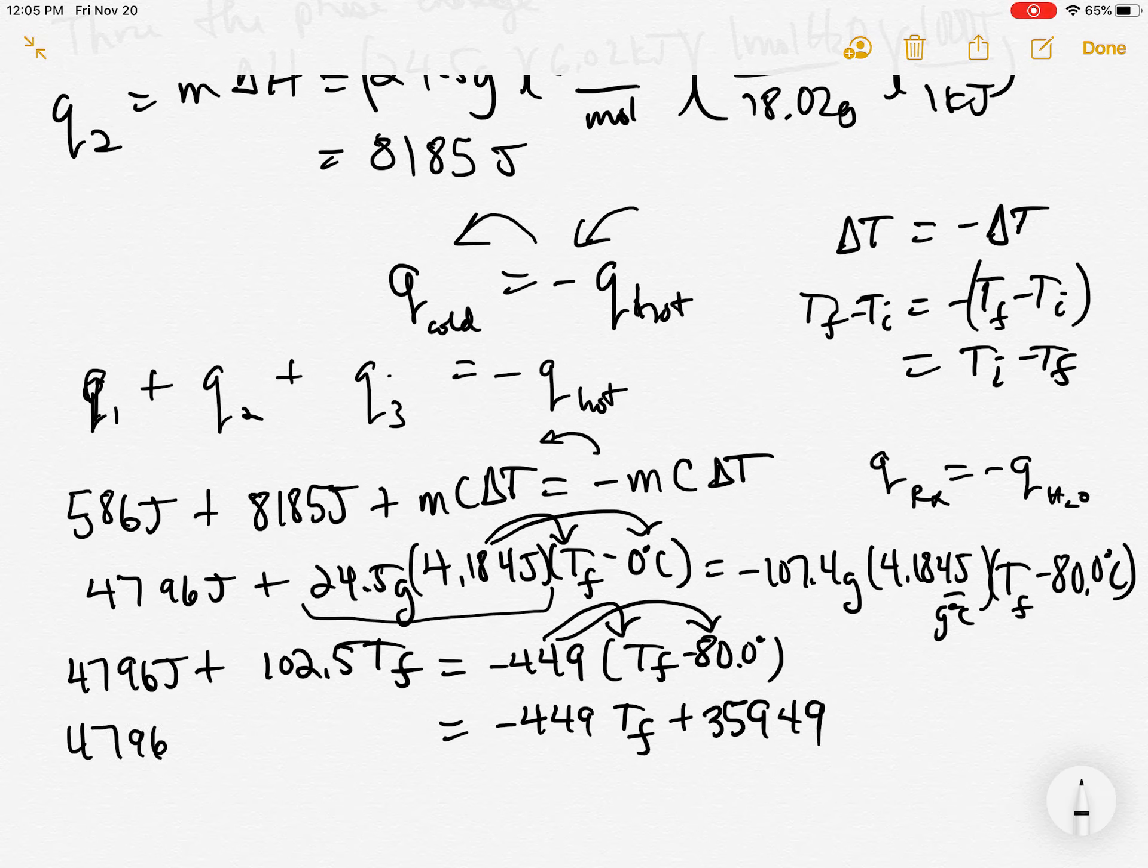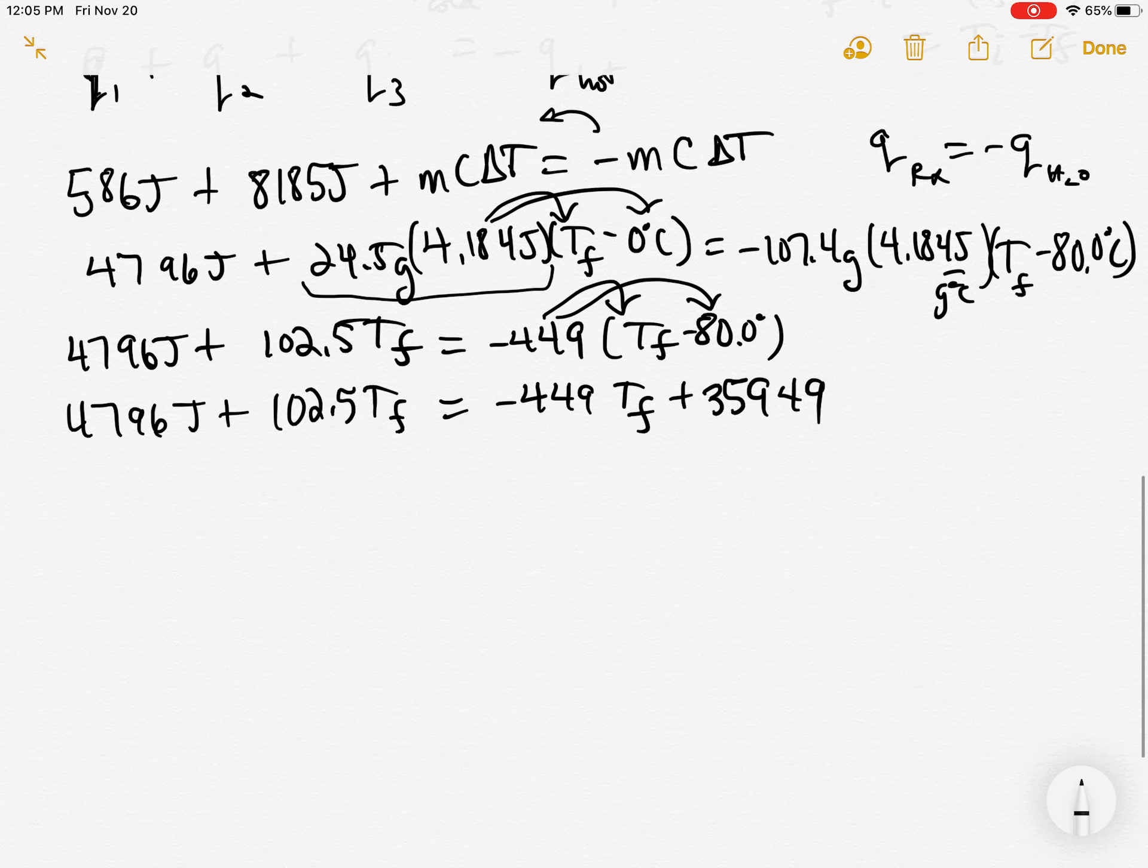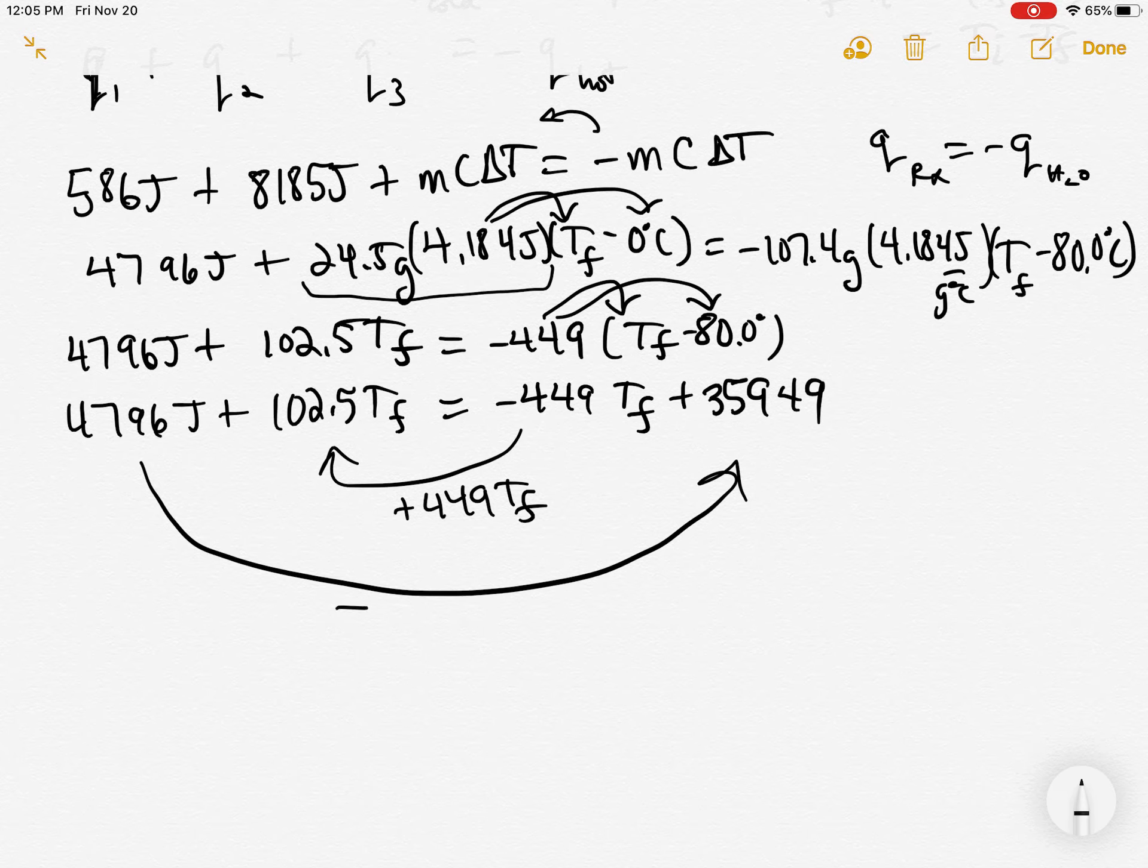Okay. And that equals the 4796 joules and the 102.5 Tf. Now from algebra, we learned we've got to combine our variables on one side and constants to the other. So I'm just going to move this one to this side by adding 449 to both sides. And I'm going to move this number over here by subtracting 4796 from both sides. When I do, I get 551.5 Tf is equal to 31153 joules.